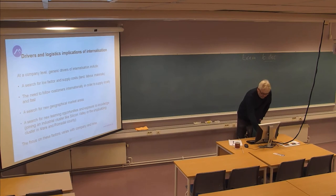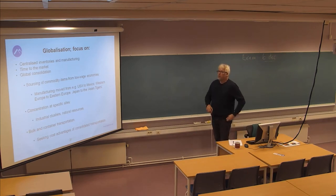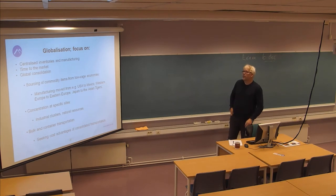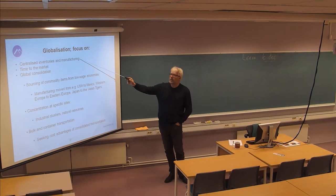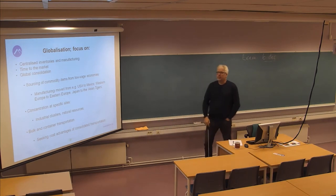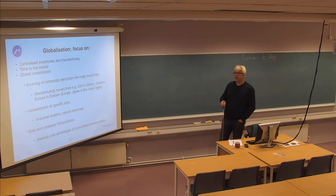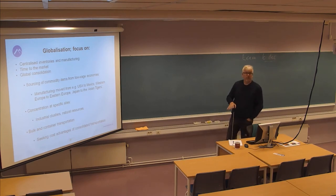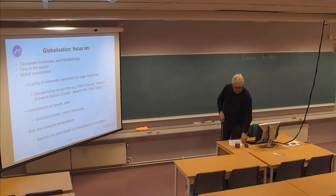We can talk about structure and how globalization is affecting the structure of production. Centralized inventories and manufacturing is one issue — by means of an efficient transport system you can serve markets from a reduced number of locations or production plants or warehouses, and that may have some advantages. Time to market is sort of a two-edged sword, because it can prolong time to market by creating longer transport distances, but one might amend that by doing so-called postponed production.